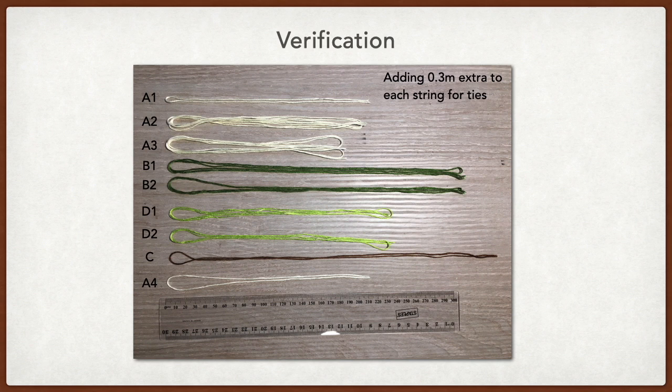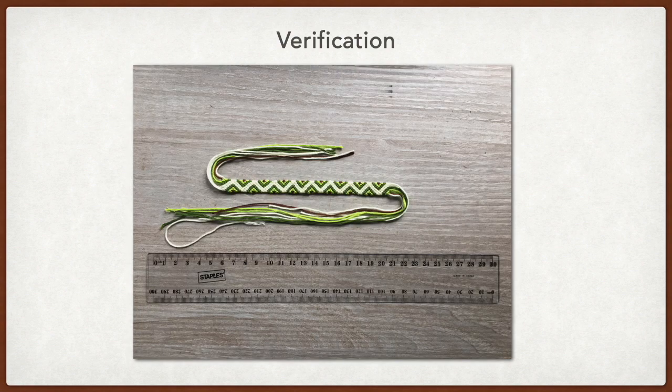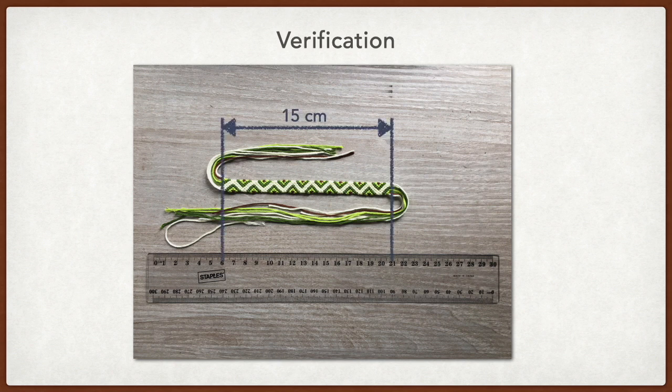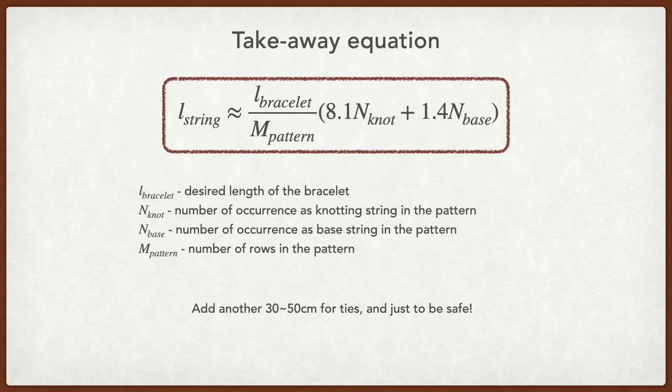I cut strings according to the table, but added an extra 30cm for the ties, and made exactly 118 rows following the avocado pattern. This is the bracelet I got. The bracelet turned out to be 15cm, as predicted, and I have about 15cm extra string left on both ends.